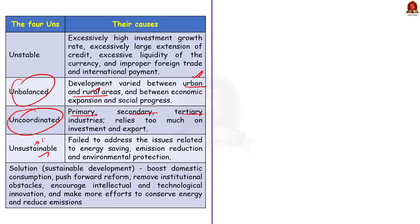Additionally, China had to adequately address environmental issues such as energy saving, emission reduction, and environmental protection. These were the major issues in the Chinese economy in 2007 highlighted by the Chinese premier. To address these economic challenges, China implemented various strategies and initiatives.